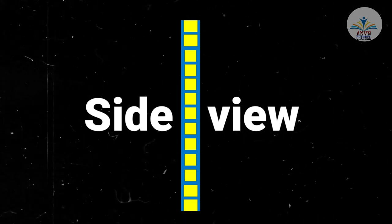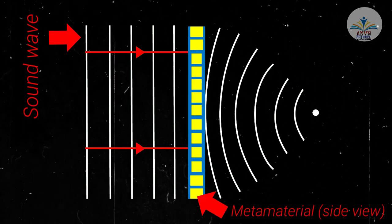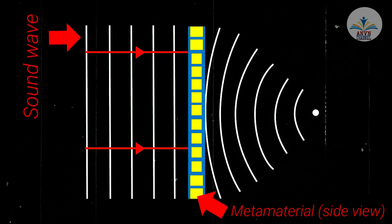Inside the metamaterial, you can see different squares in it. These help to manipulate the sound waves into converging sound waves.